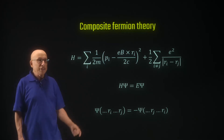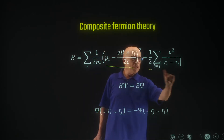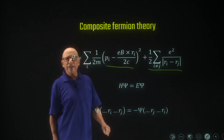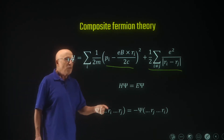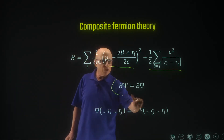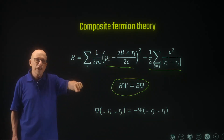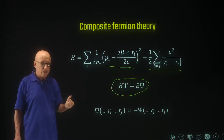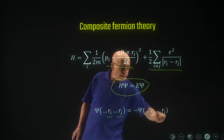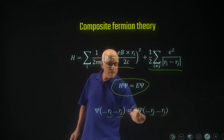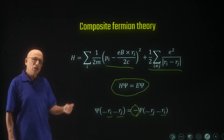Our starting point is the Hamiltonian of electrons in a magnetic field with a kinetic term and a Coulomb interaction term. We neglect disorder, and we'd like in principle to solve Schrödinger's equation. The solution has to be an electronic solution, meaning it has to satisfy fermionic statistics and get the minus sign when we interchange the position of two electrons.